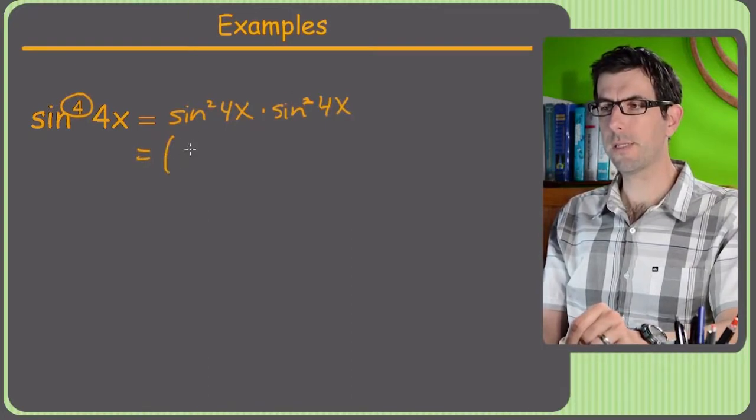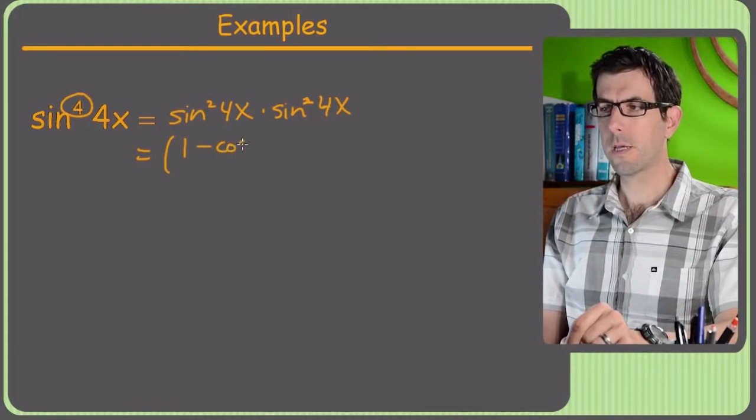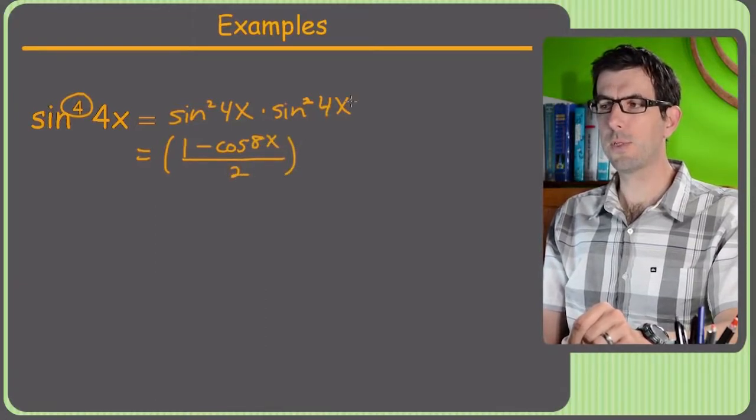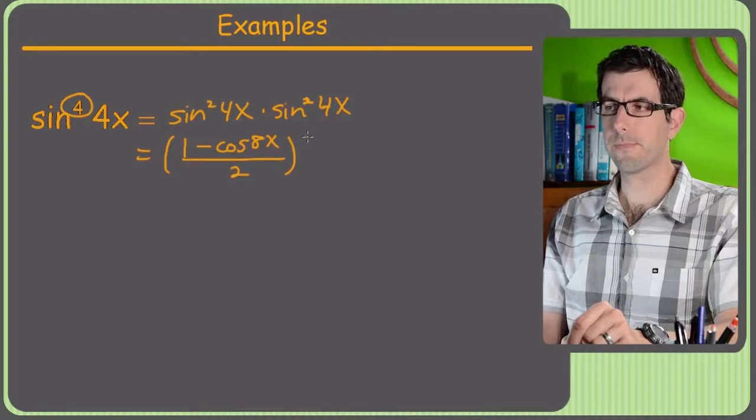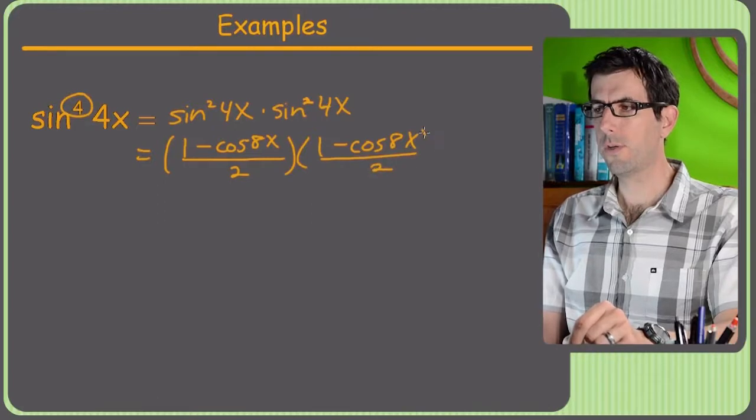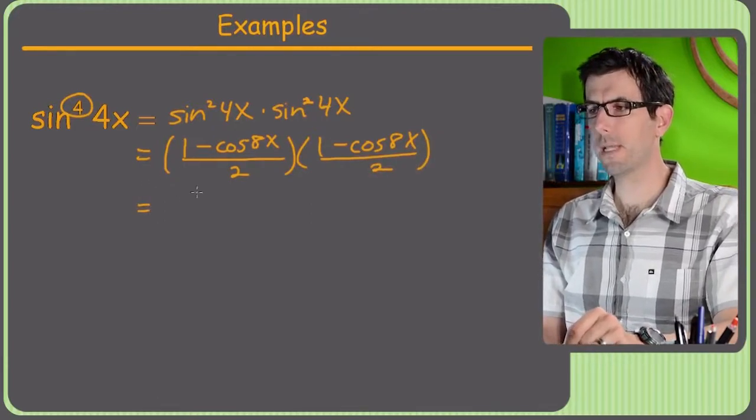All right. So sine squared of something just becomes 1 minus cosine of double that same thing. So 8x over 2. And same story for this guy, right? So 1 minus cosine 8x over 2. All right. So I'll pull those 2s out front, or those halves out front, to make it a little bit easier to work with.